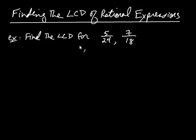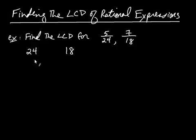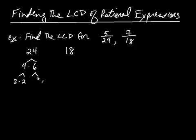To find the LCD of these two fractions, we simply take the two denominators — in this case 24 and 18 — and write them off to the side. Then you find the prime factorization of each number. So 24 can be written as 4 times 6, and 4 is 2 times 2, and 6 is 2 times 3. At this stage those are all prime, so we're finished for the 24.